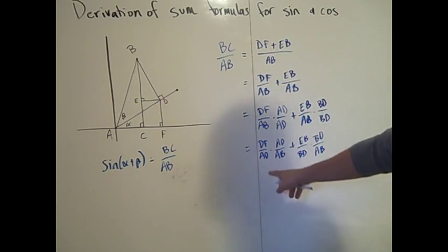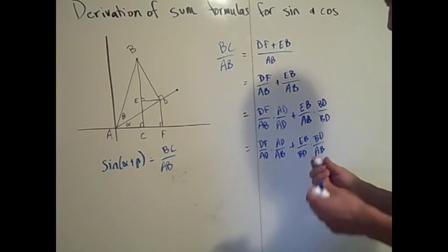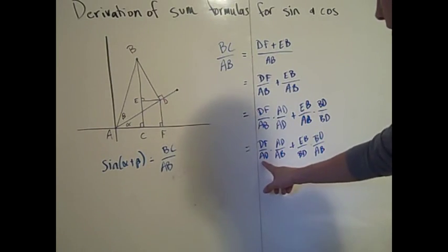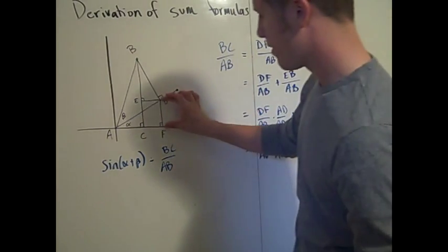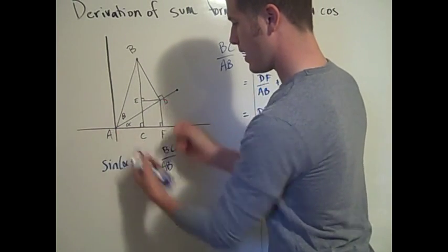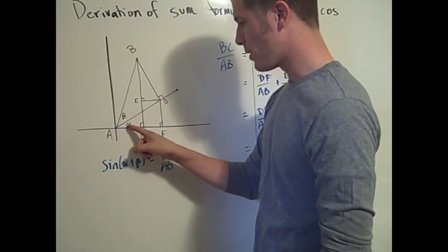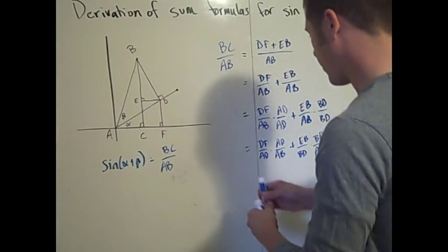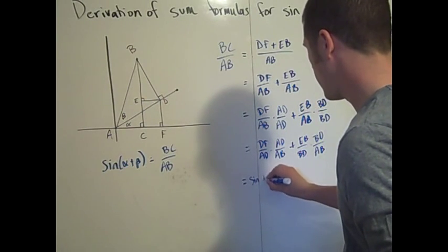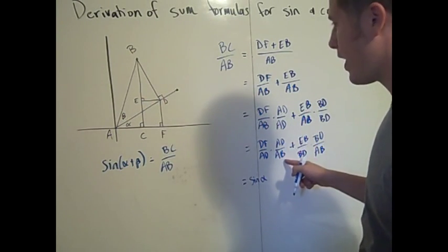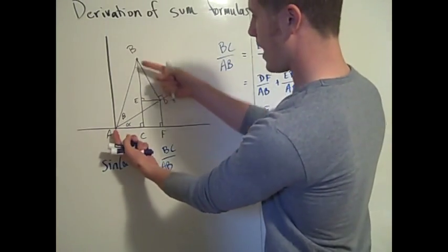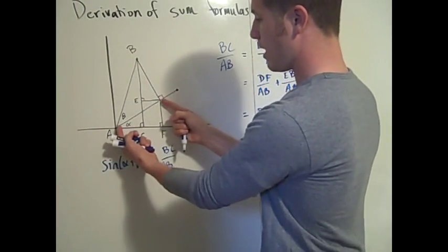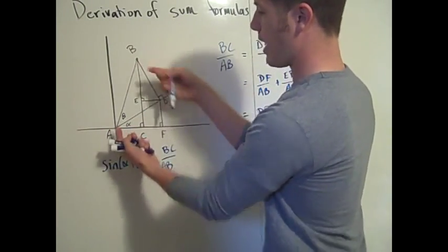Now we have to do a little bit of investigation. DF over AD is exactly the sine of alpha — opposite over hypotenuse — so that's sine of alpha. Now AD over AB: lo and behold, that's the cosine of beta. Here's the right triangle — this is the adjacent over the hypotenuse — so that's cosine beta. So we can already see it sort of falling into place.